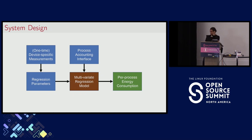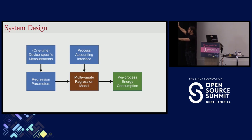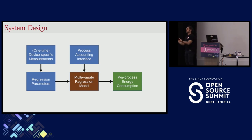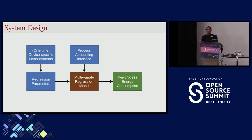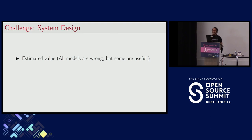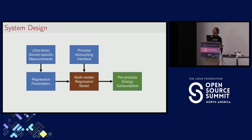So we've covered the key components. The device-specific measurement experiments give us the regression parameters. The process accounting from /proc gives us the input variables. Combining parameters and inputs in the regression model gives us a predicted energy value.